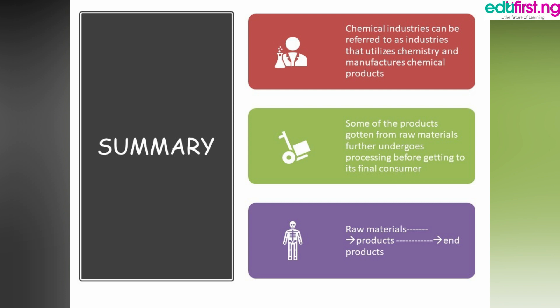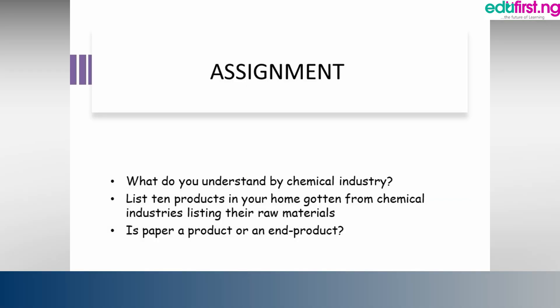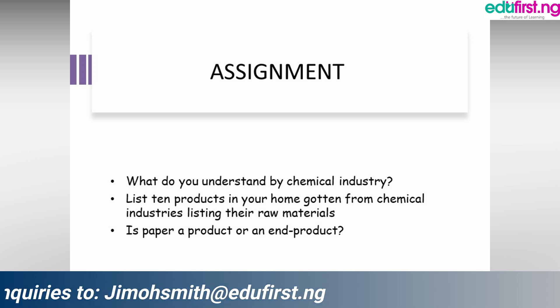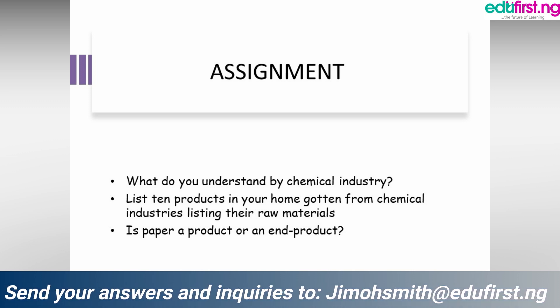For your assignment: What do you understand by chemical industry? List the products from chemical industries, noting their raw materials. Also determine — is paper a product or an end product? I'll leave these findings to you. Thank you for today's class and I hope you learned something new.